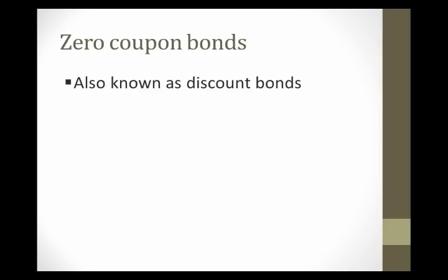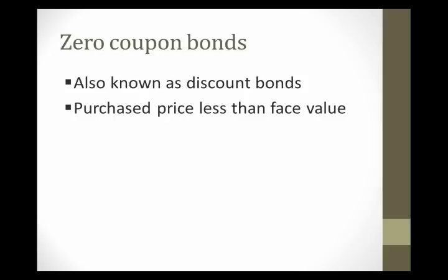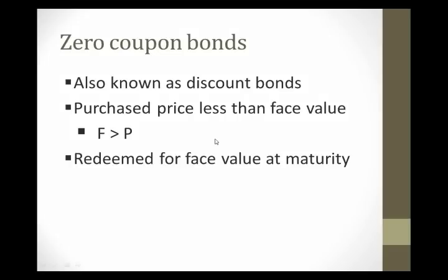Zero coupon bonds are also known as discount bonds, and they're known as discount bonds because they're purchased at a price less than face value. In other words, F, our face value, will always be larger than the purchase price, P.